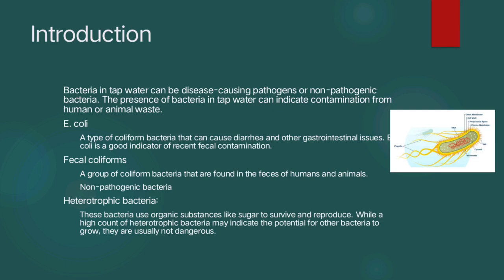Heterotrophic bacteria — these bacteria use organic substances like sugar to survive and reproduce, while a high count of heterotrophic bacteria may indicate the potential for other bacteria to grow.